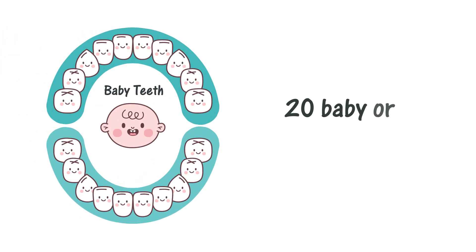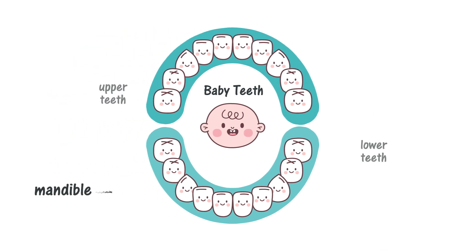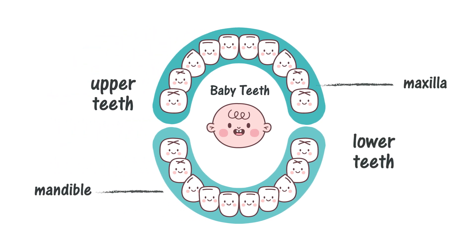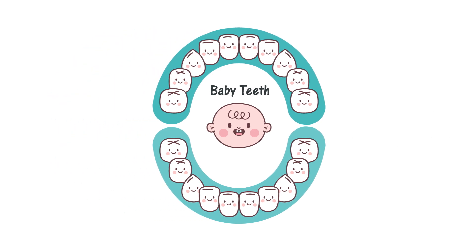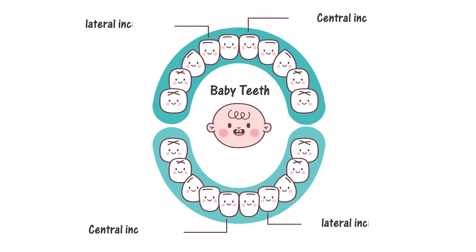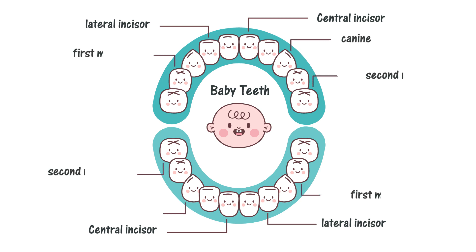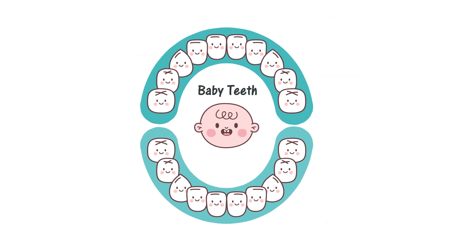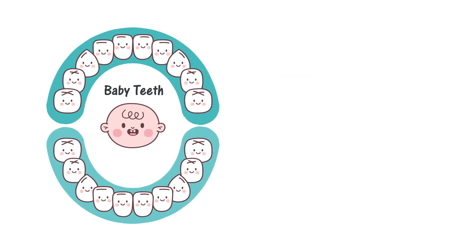On the other hand, children have 20 baby, or deciduous, teeth — 10 in the maxilla and 10 in the mandible. Each quadrant contains two incisors, one canine, and two molars. Note that in the deciduous teeth, there are no premolars.